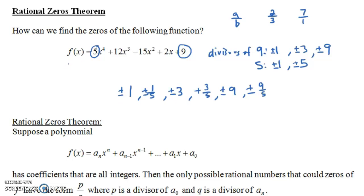Now, are they actually zeros of the function? You'd have to check them individually to see if each one is actually a zero. But these are the only possible rational numbers that could be zeros. So, for example, could f of seven equal zero? No, because seven is a rational number and it's not in this list. Could f of negative three be a zero? Well, it's possible because negative three is one of our numbers — to actually check it, you'd have to plug it in. So any rational number that's not in this list could not be a zero.